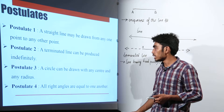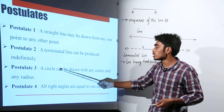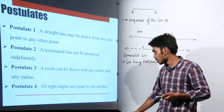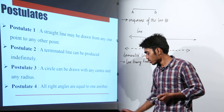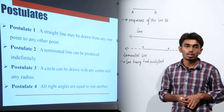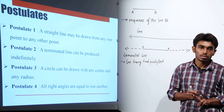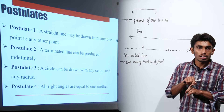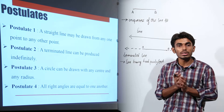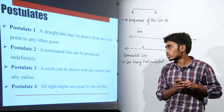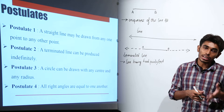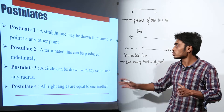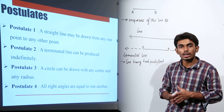The third postulate: a circle can be drawn with any center and any radius. To draw a circle, we need only two parameters — the radius and the center to define the position. So if you are given the center and the radius, a circle can easily be drawn. This was the third postulate of Euclid.